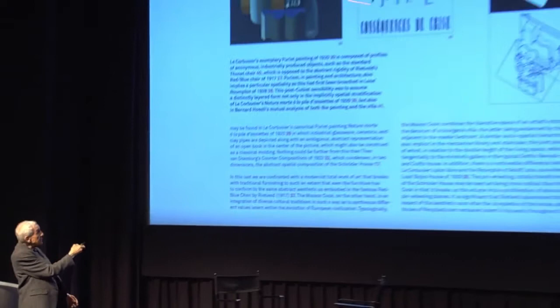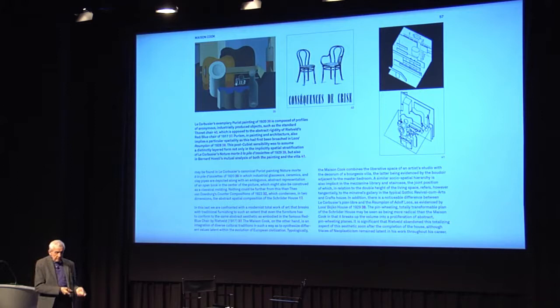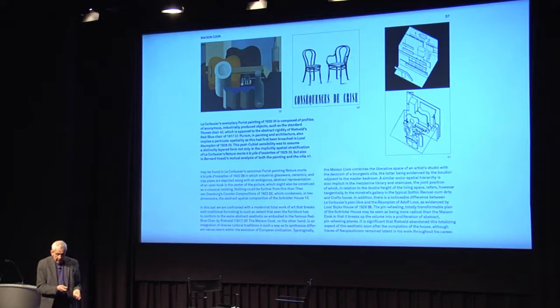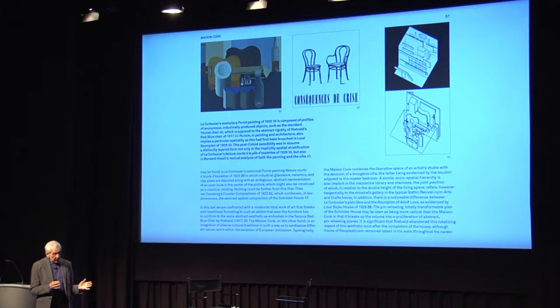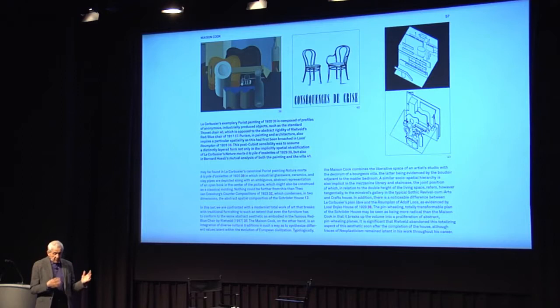This is actually a study by Bernard Hoesli of the implicit layering of the space inside this purist painting, and by the same figure the implicit layering of the space inside the Villa Garches. From a 1925 essay from Exposition des Arts Décoratifs, the standard object — the industrially produced standard object, like industrially produced glassware, standard musical instruments, clay pipes, bottles and glasses — produced by industry, not really art objects, but objets trouvés — found objects, the kind of spontaneous production of an industrial civilization. That is the value implicit in this work.